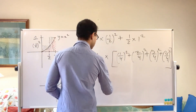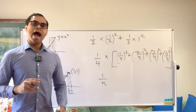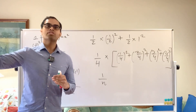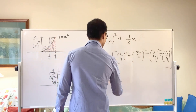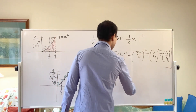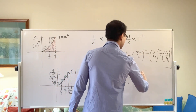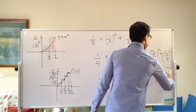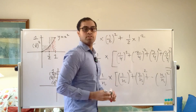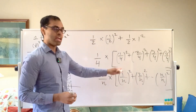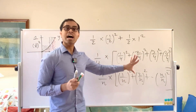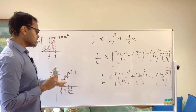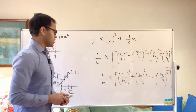Each rectangle is going to have a base of 1 over n. The heights are going to be 1 over n squared, 2 over n squared, 3 over n squared, all the way up to n over n squared. So we get 1 over n times the sum of one-over-n squared plus two-over-n squared, all the way up to n-over-n squared. As n gets larger and larger, this gets closer and closer to some number — and that number is the area under the graph of the parabola.